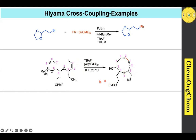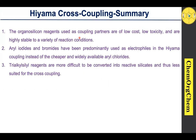In summary: the organosilicon substrates used as coupling partners in the Hiyama reaction are low cost, low toxicity, and highly stable to a variety of reaction conditions, compared to boron-based reagents in Suzuki coupling, tin-based reagents in Stille coupling, magnesium-based substrates in Kumada coupling, and zinc-based substrates in Negishi coupling. However, aryl iodides and bromides have been predominantly used as electrophiles rather than cheaper and more widely available aryl chlorides, and trialkylsilyl reagents are more difficult to convert into reactive silicates, making them less suited for the Hiyama cross-coupling reaction.